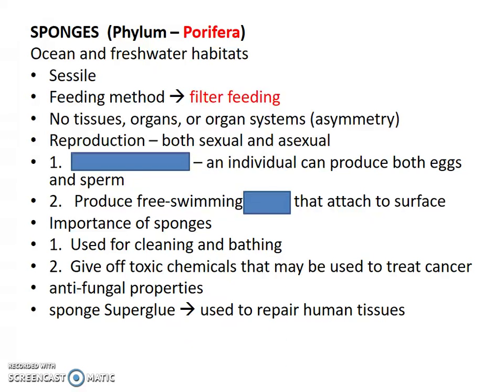The sponge sucks in a whole bunch of water, and it has these little choanocysts and choanocytes that filter out the little pieces of food and eat them. In fact, a sponge will suck in over a ton of water to get an ounce of food every hour. There are no tissues, no organs, no organ systems. They do have asymmetry, and they are kind of an aggregate of single cells working as one big organism.